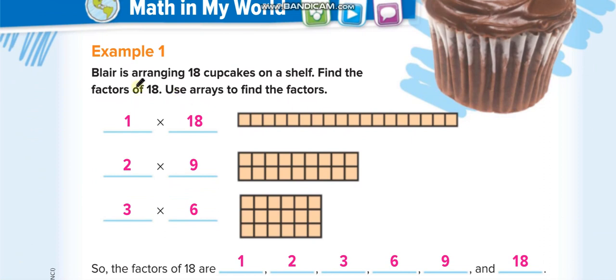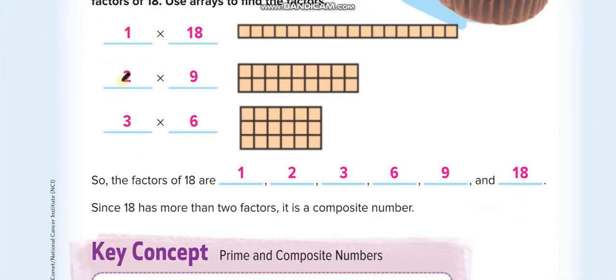A player is arranging 18 cupcakes on a shelf. Find the factors of 18. The factor pairs are: one times 18, two times nine, and three times six. We have more than one factor pair and more than two factors, so 18 is a composite number, not a prime. The factors are 1, 2, 3, 6, 9, and 18.